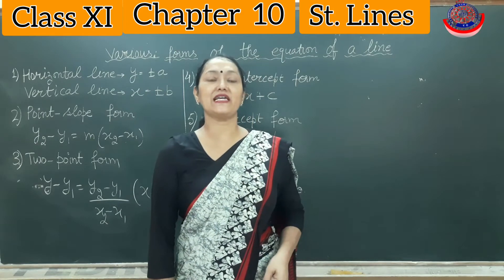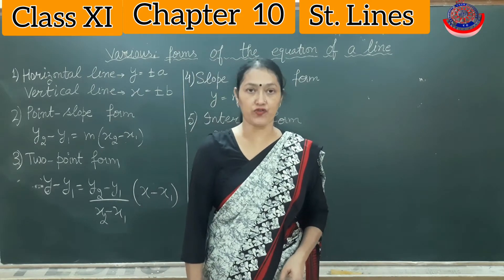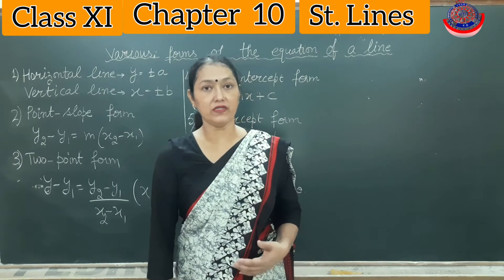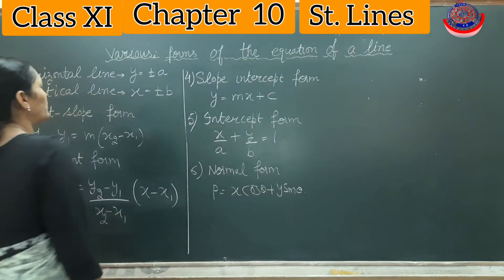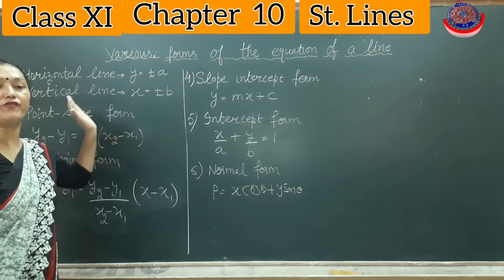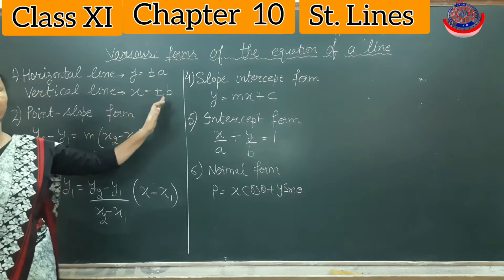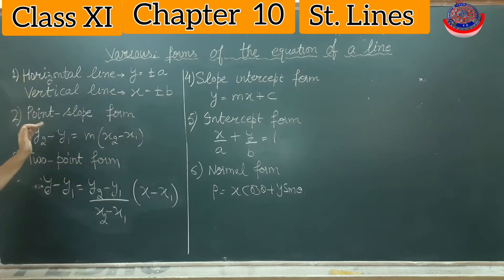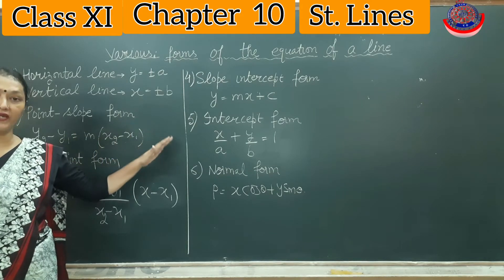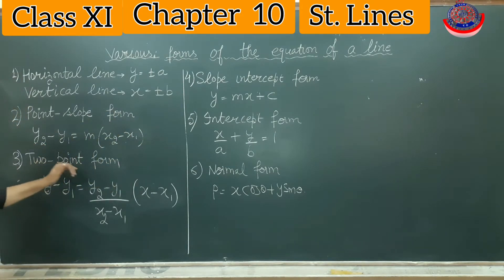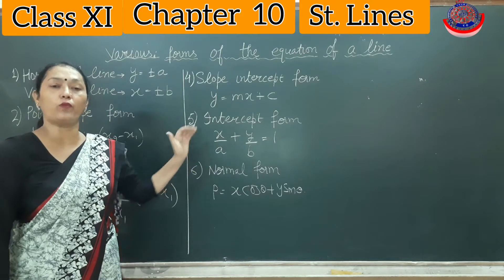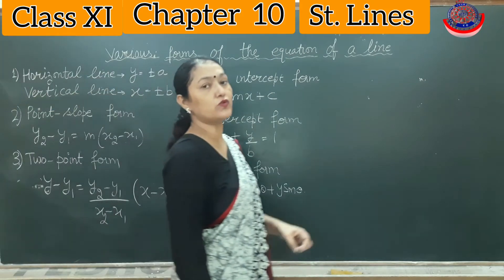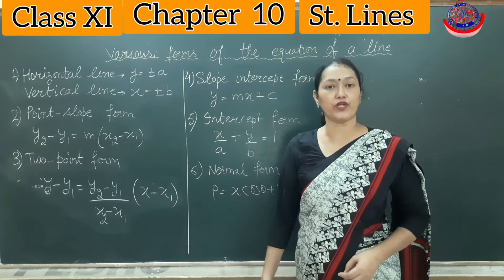Namaste girls. In our previous lecture, we learned various forms of the equation of a line. Let us recall what all we have learnt: horizontal line, vertical line, point-slope form, two-point form, slope-intercept form, intercept form, and normal form. Now in today's lecture, let us do some examples related to all these equations of the line.